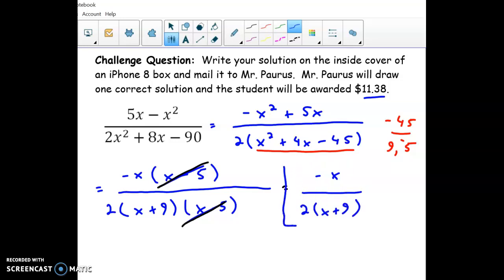And it's tempting to want to distribute the 2 in the bottom there, and if you want to do that, you certainly can. I often leave my answers in factored form like this just in case I miss something. I would hopefully see it here and then cancel it out. So normally I leave it in factored form, but if you wanted to multiply it out, that would also be correct.